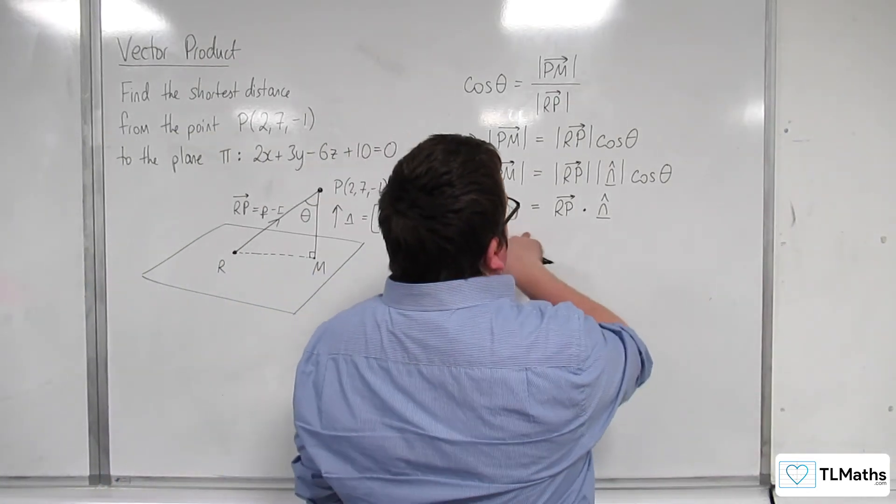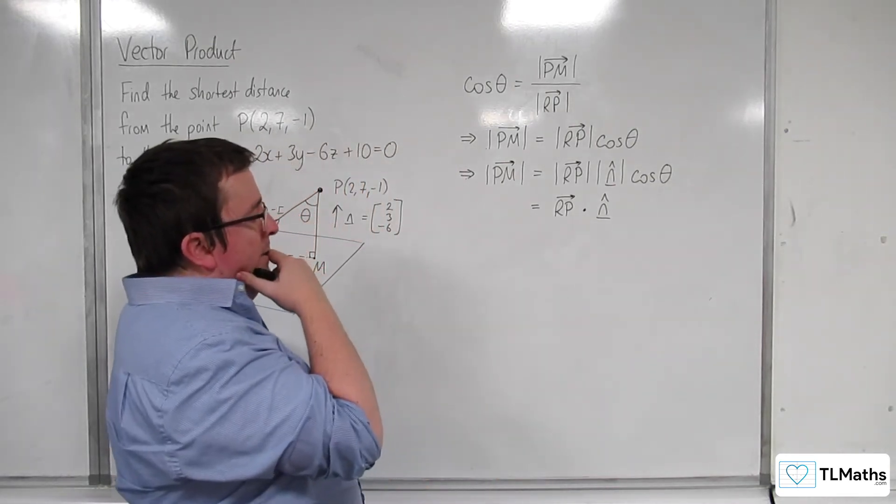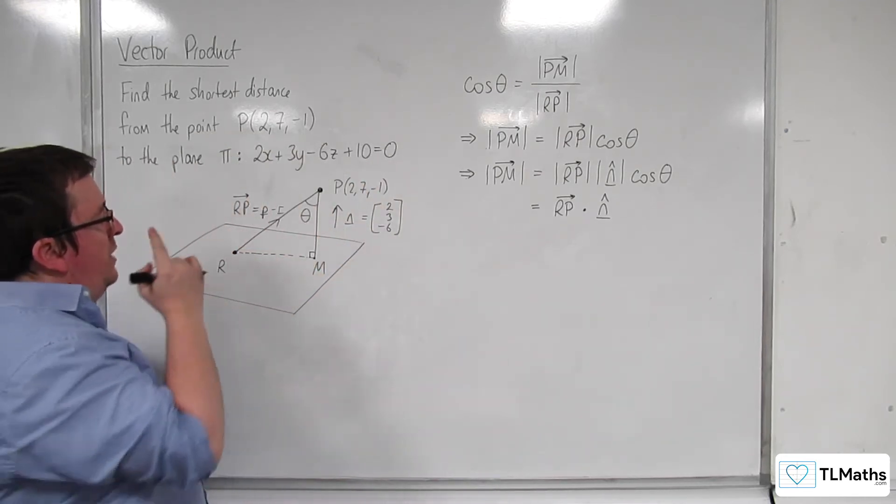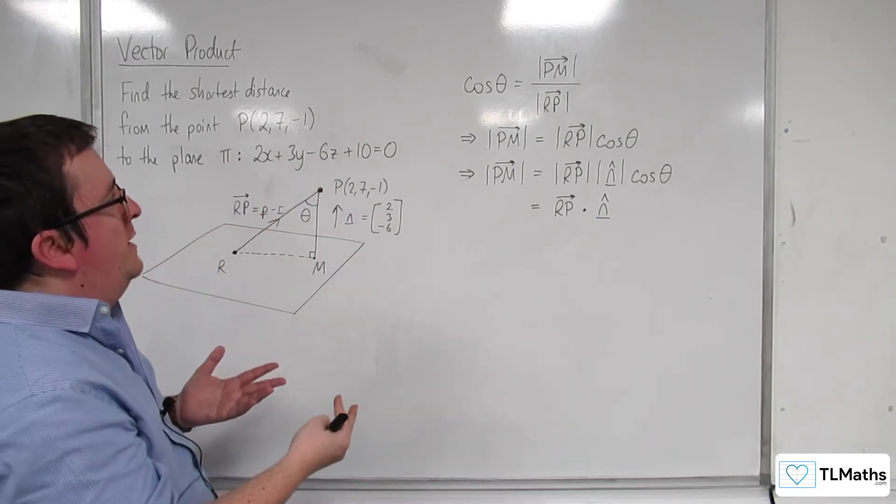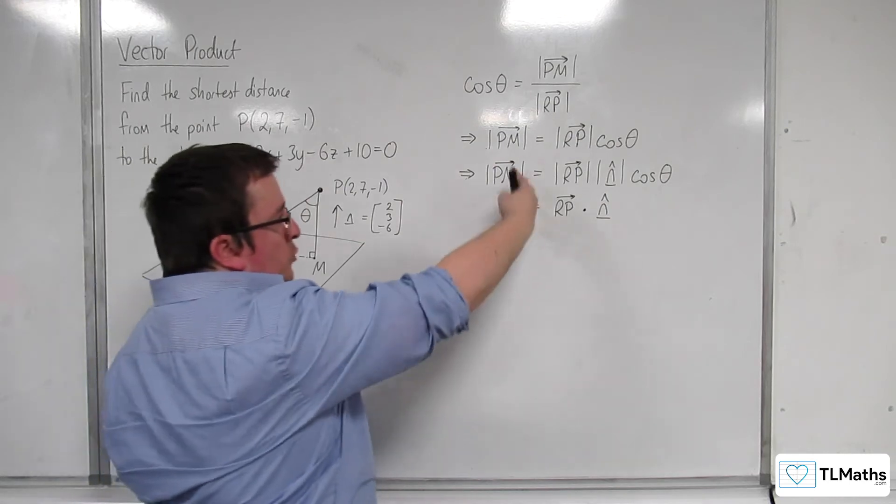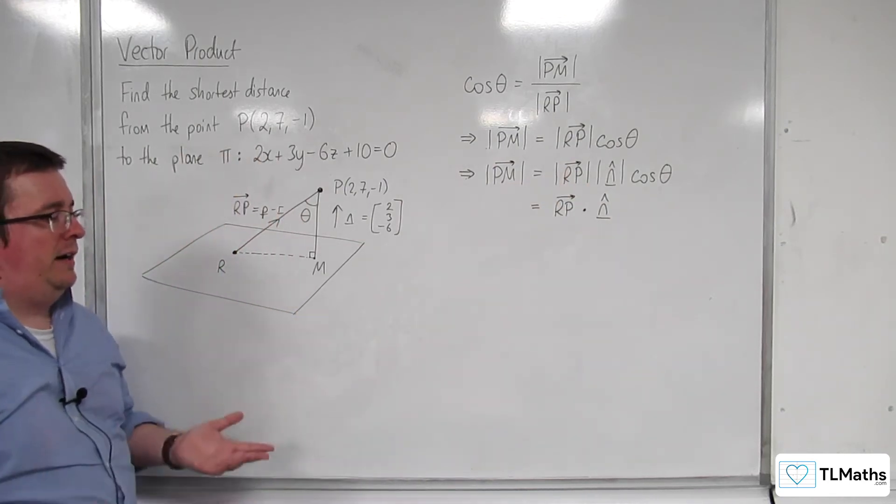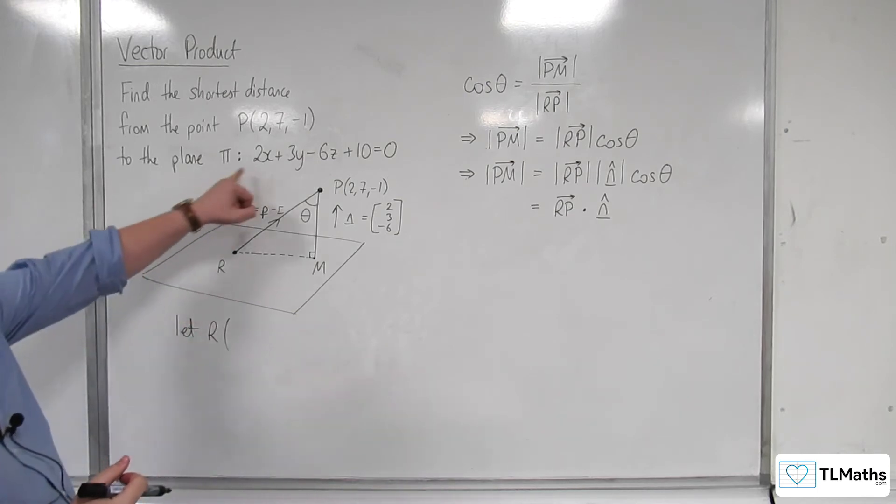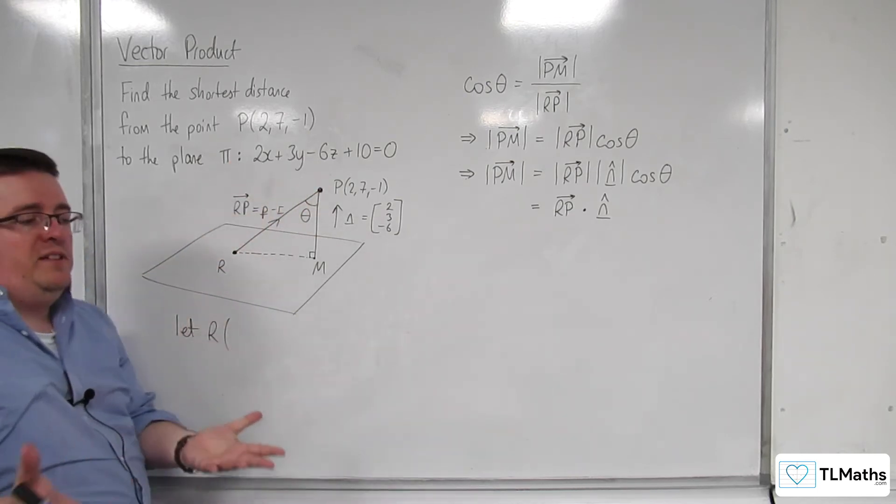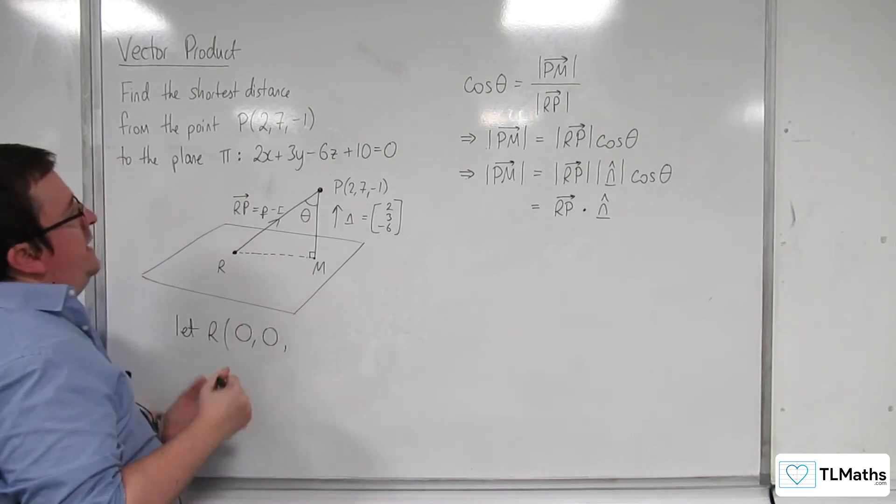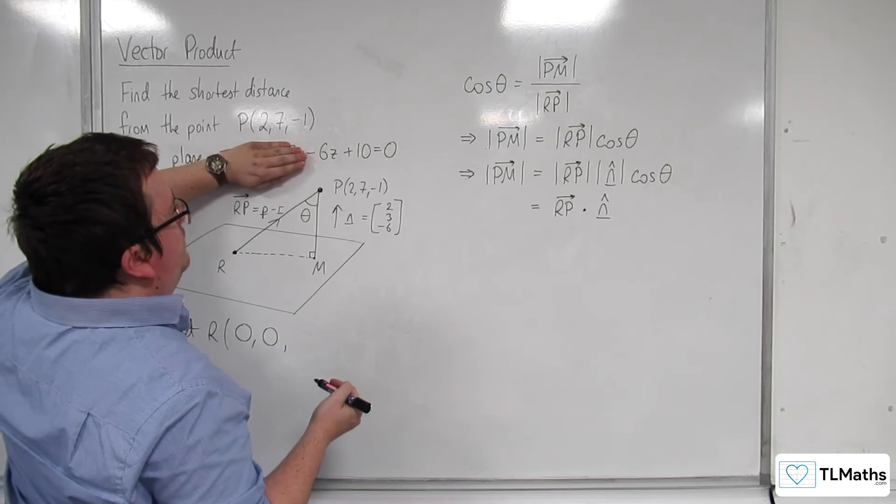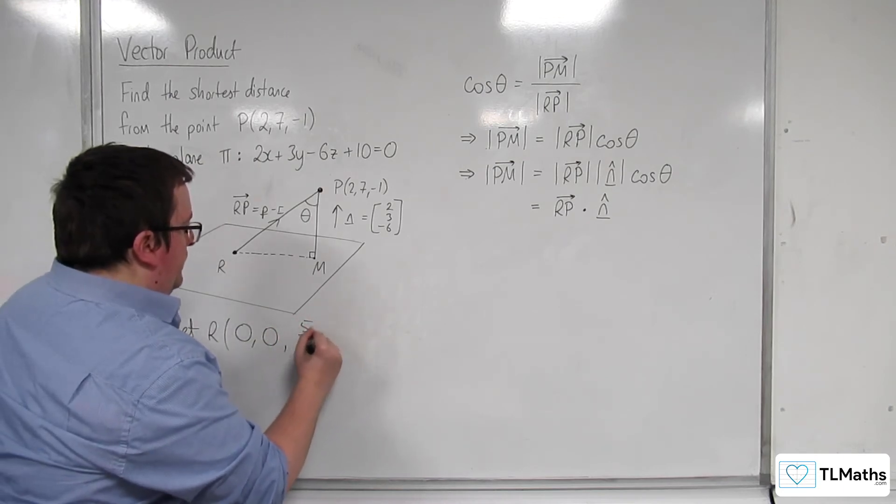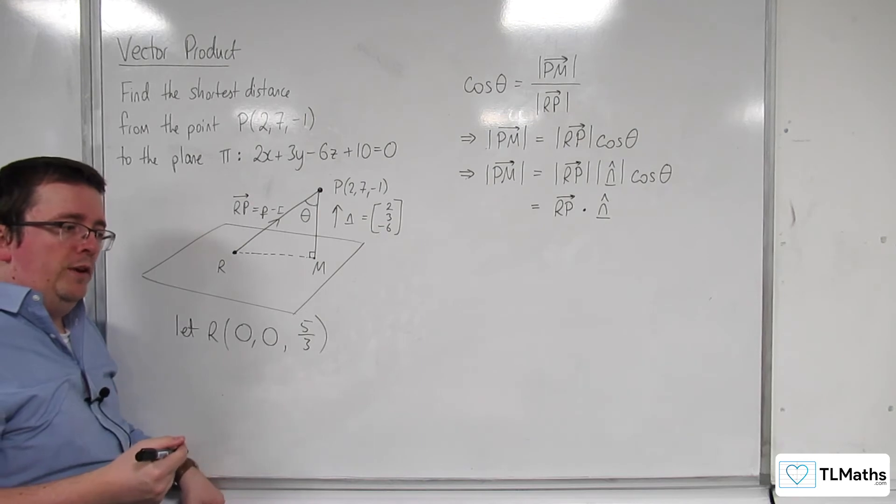So what we can now introduce here is, I'm going to need some point R. We're not doing this generally here, but in order to get to this stage, I've got to explain that part. So let's choose a point R. I need a point that's on the plane. So let R, I'm going to choose x and y to be 0. If I do that, then x and y are 0, so that means that z has to be 10 over 6, so that means it's 5 thirds. So I know that this is a point on the plane. Let R have those coordinates.